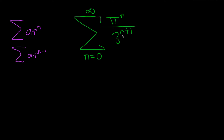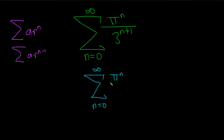Here we have an n and an n plus 1, so let's go ahead and rewrite this in a way that will allow us to write it in one of these forms. So this is the infinite sum from 0 to infinity of pi to the n over 3 to the n times 3 to the 1. The reason you can do that is because when you multiply numbers with the same base, you end up adding the exponents. So this is just a nice way to do it.